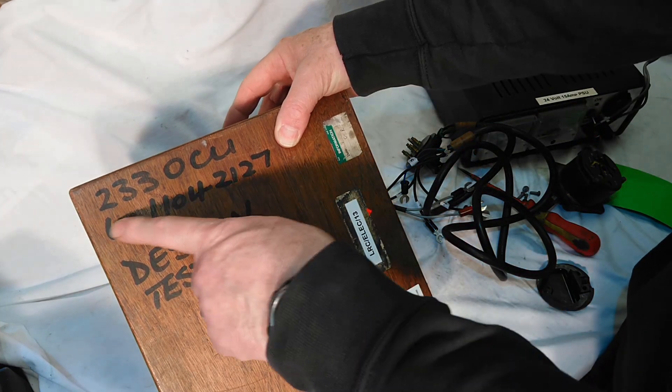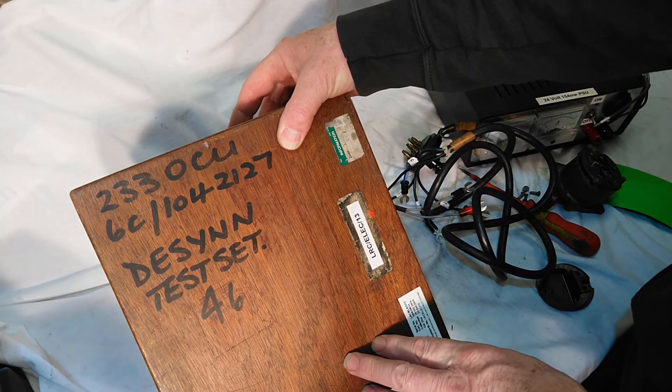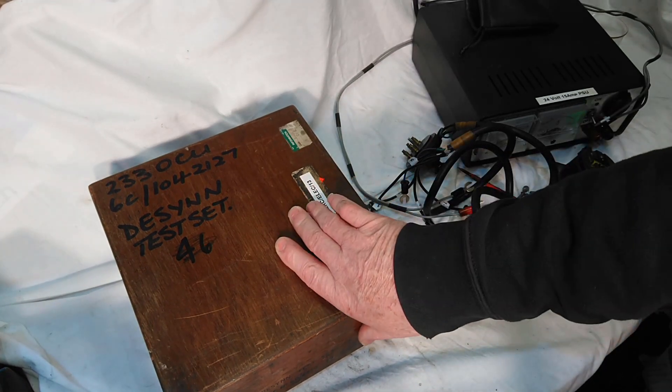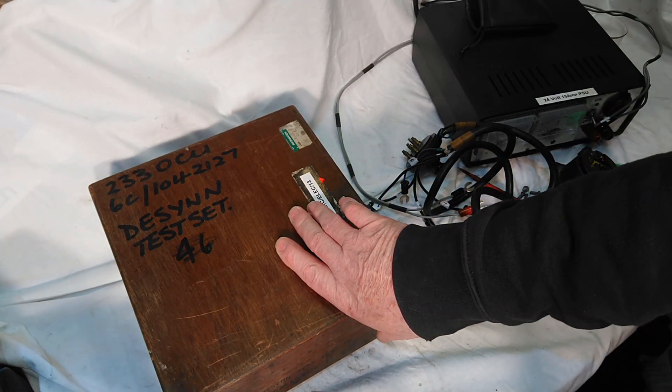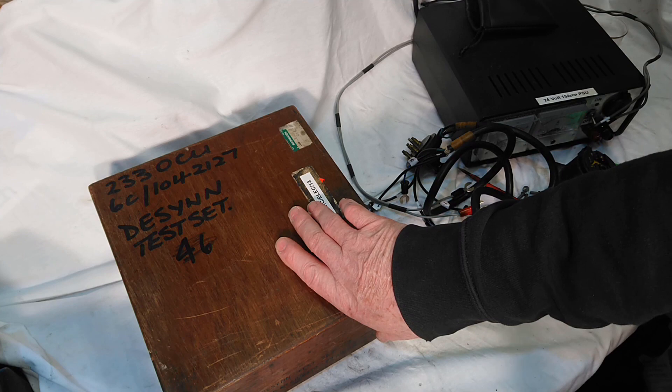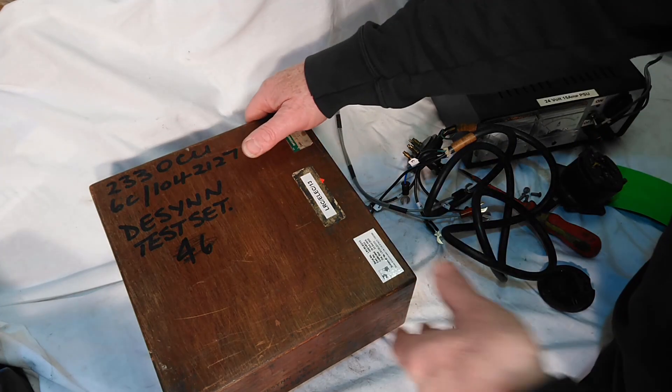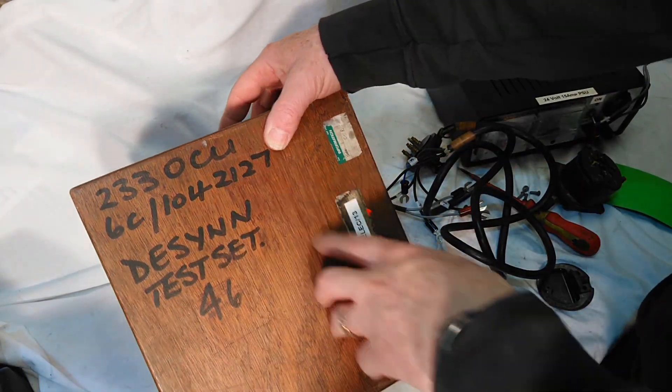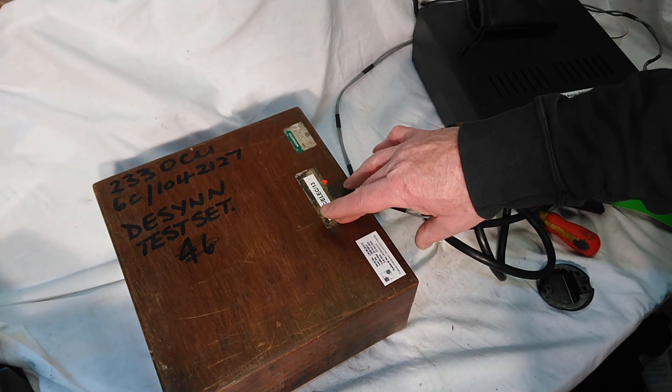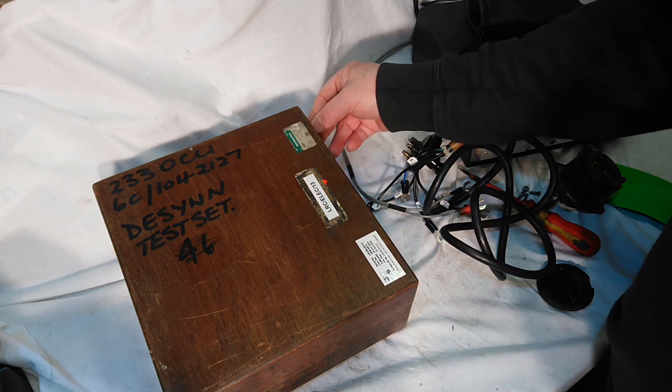It's marked 233 OCU. For those of you in the know, you'll know what that is. But for those of you who don't, 233 OCU was Harriers. I think they were at Wittering. I did Google it the other day but I didn't write it down, which was rather foolish of me. But I know they ended up at Wittering, they were somewhere else before then. So yeah, Harriers. They only went out of service a few years ago, well when I say a few years, sort of 10 years or more ago.